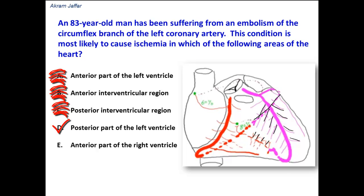The circumflex branch passes around the heart, around the obtuse margin of the heart. It supplies the obtuse marginal artery, which supplies the lateral side of the left ventricle, and then goes on to the inferior surface of the heart to supply the posterior part of the left ventricle, which is located on the diaphragmatic surface of the heart. So this is the correct option.